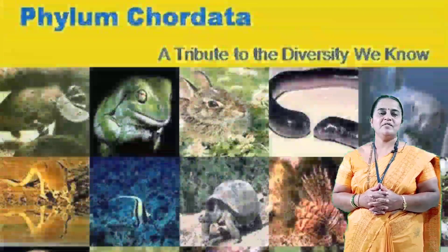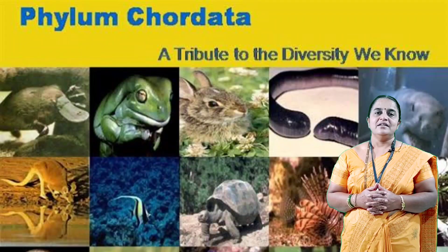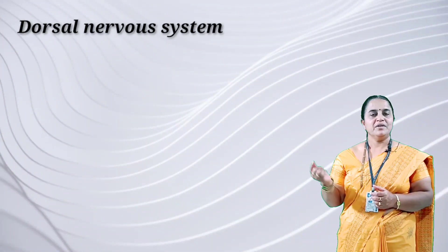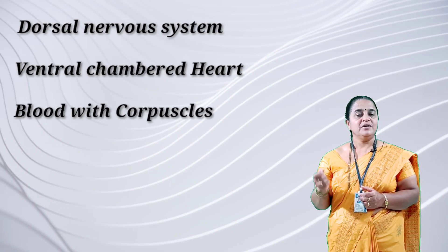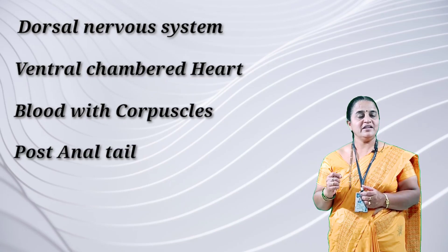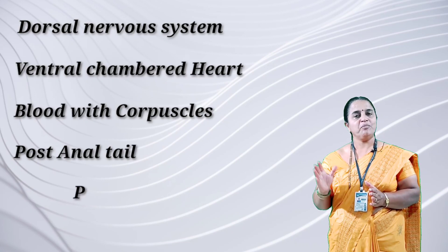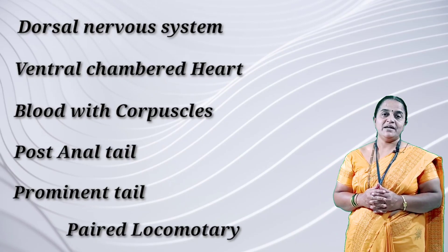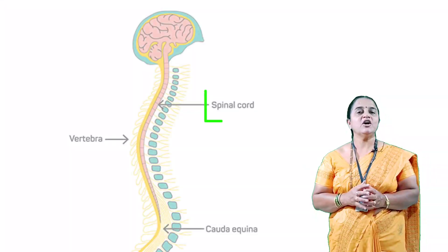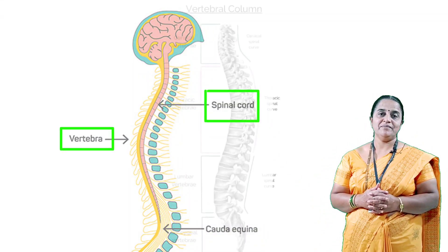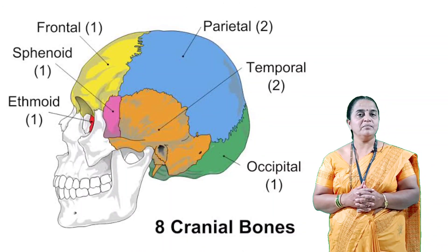As these animals come under Chordata, they have a dorsal nervous system, ventral chambered heart, blood with corpuscles, and a post-anal tail persisting in larval life. Some animals have a prominent tail. The locomotory appendages are paired. The spinal cord is protected by vertebrae forming a vertebral column, and there are cranial bones around the brain.